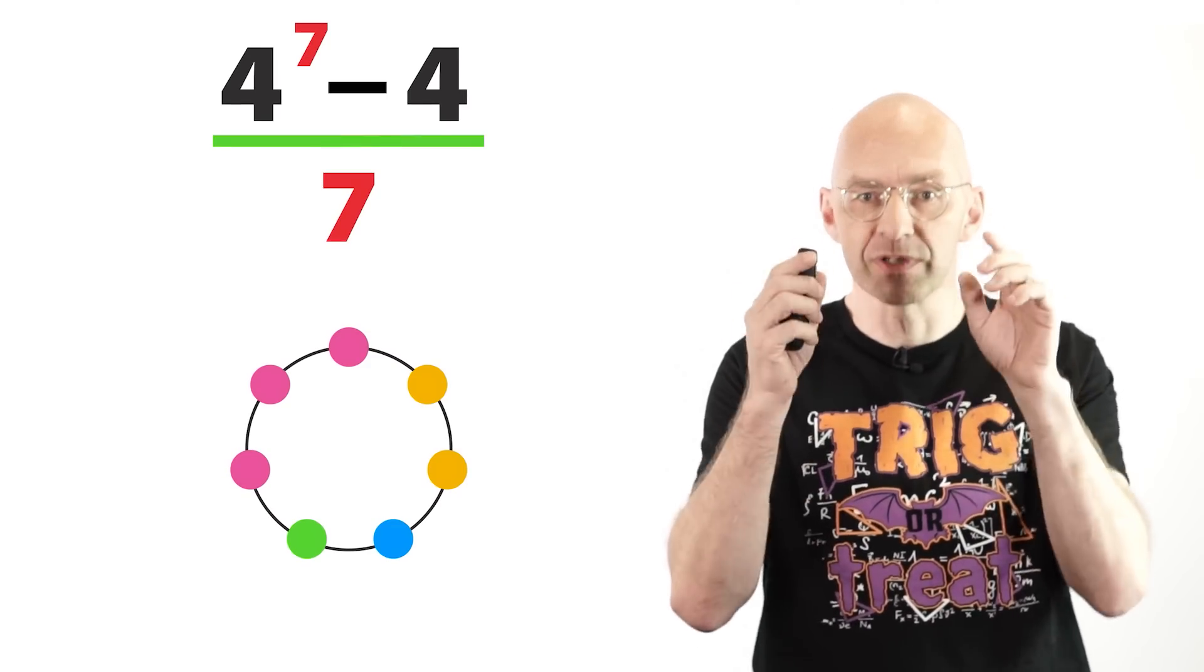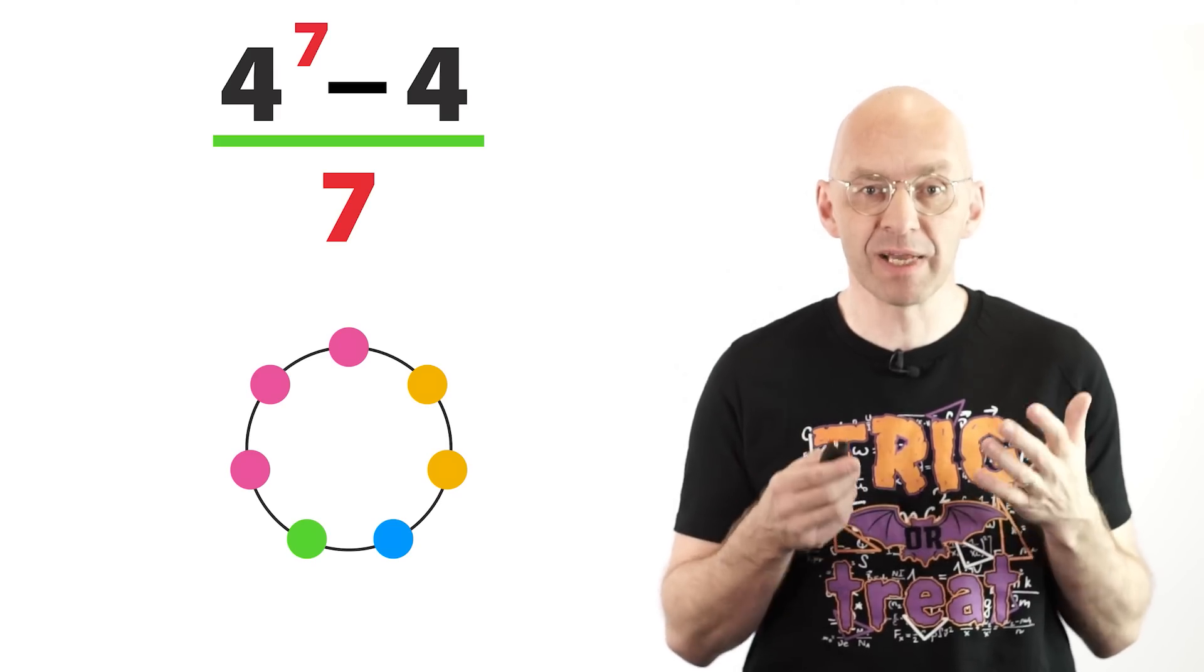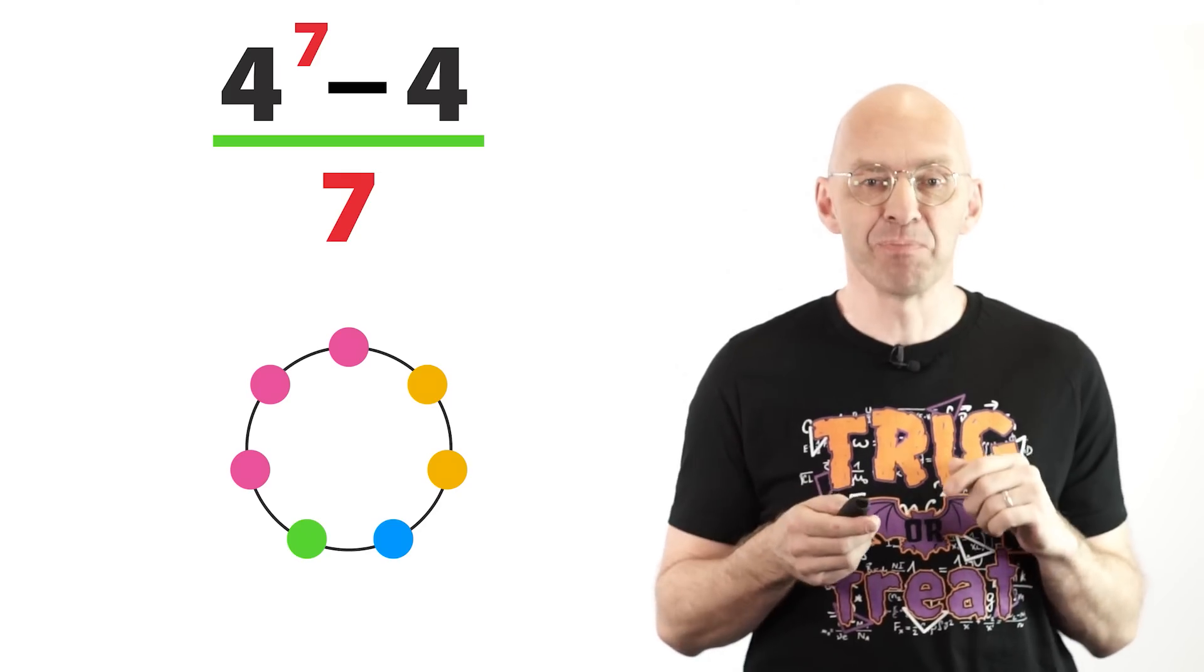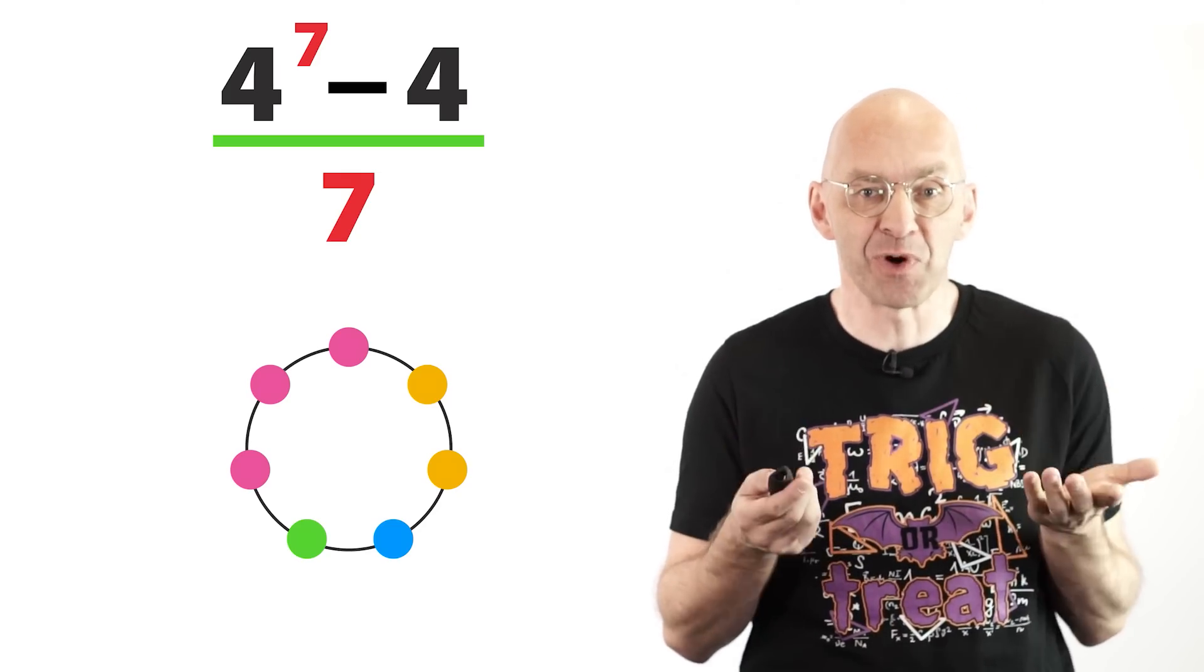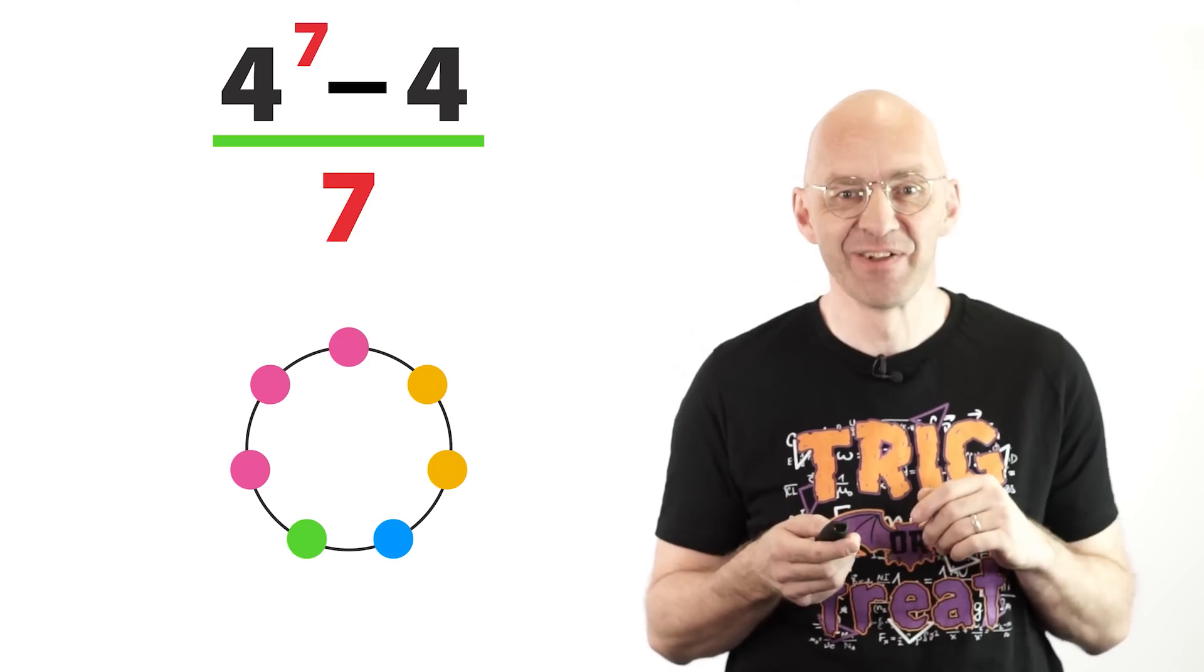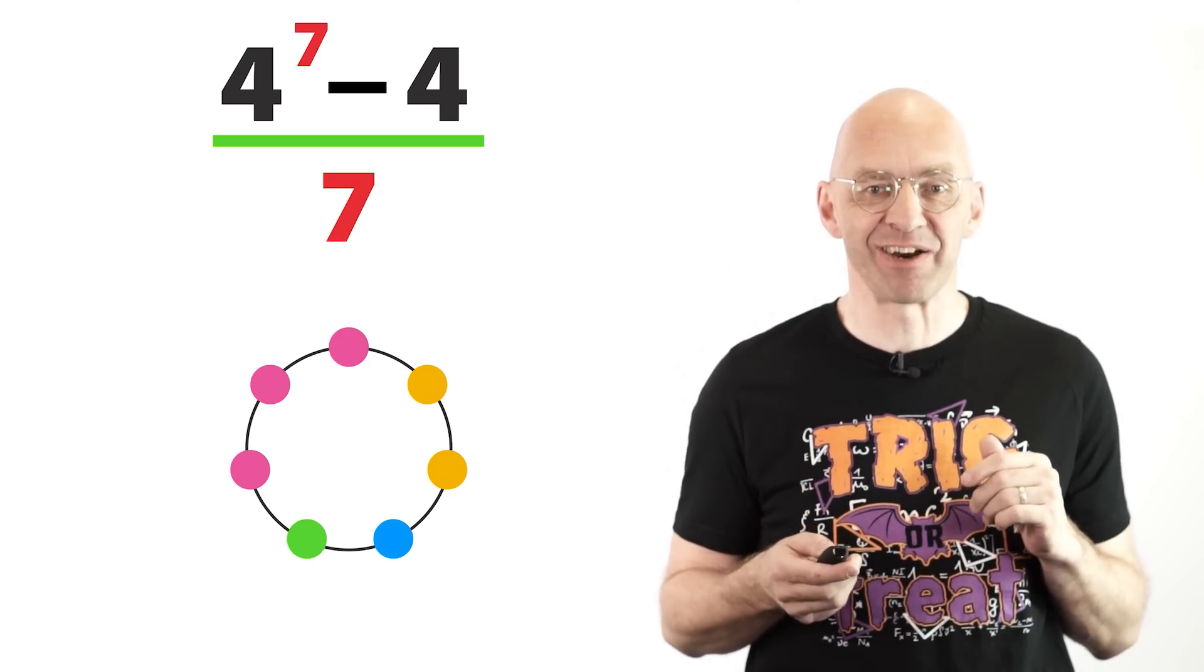Now, of course, the number of different necklaces must be an integer, right? But for that to be the case, 7 must divide 4 to the power of 7 minus 4, which is what we want to prove. Sneaky, huh? Okay, time to begin counting necklaces.